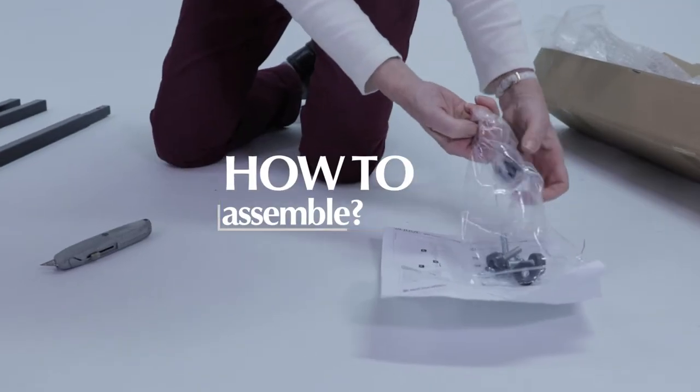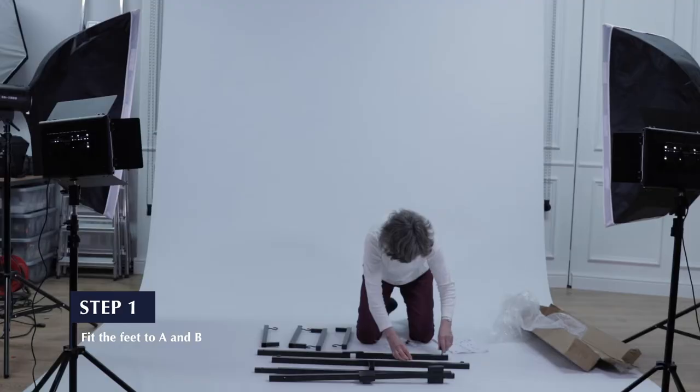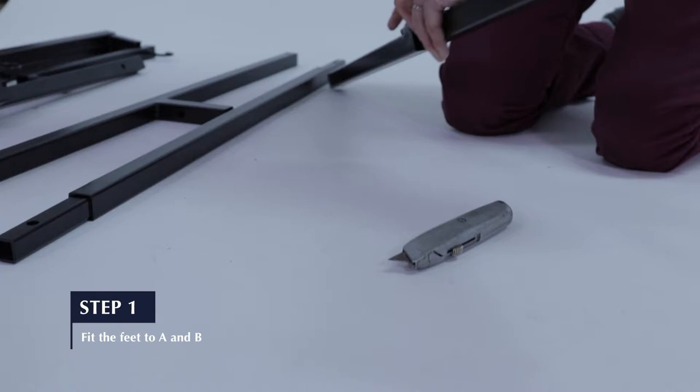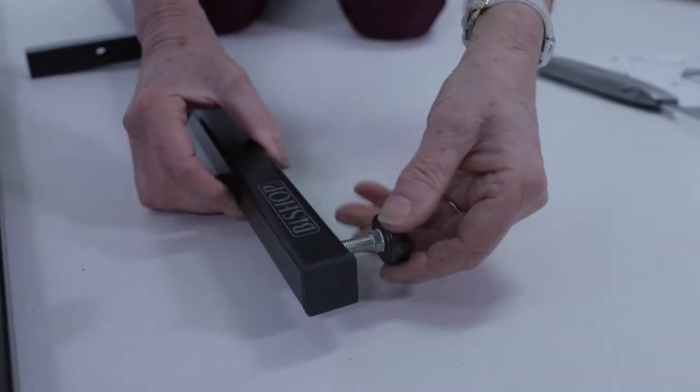Let's move on to assembly. Step 1. Screw the adjustable feet into the base sections A and B. Just screw them in part way for now, we'll come back to adjust them shortly.